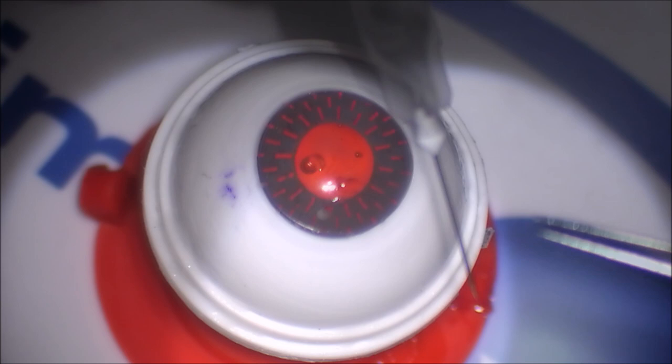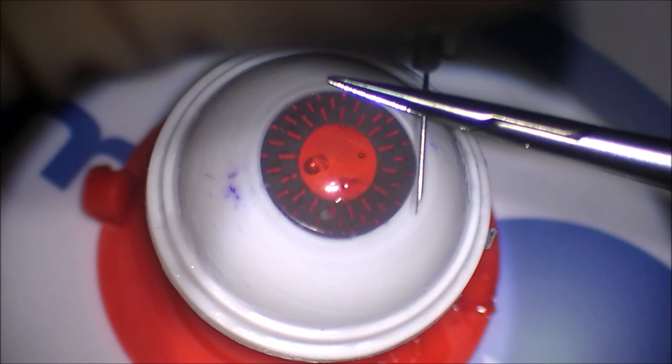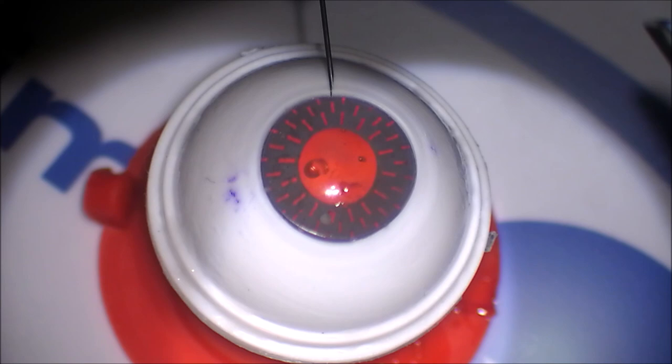And this is my 25 gauge needle, which I'm going to use to externalize the leading haptic. Again, this is my modification, so this is not quite how Yamani intended it. But I'm going to go ahead and externalize the leading haptic so I can cannulate the trailing haptic first.